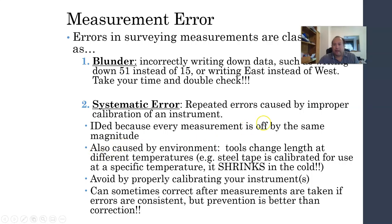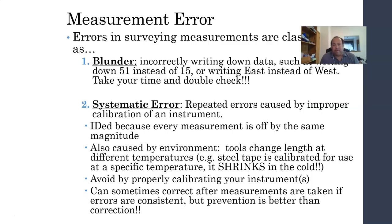Let's talk about some errors that can be made. The first type of measurement error is a blunder — that's just where we make a mistake. The example here is writing down 51 instead of 15, or meaning to say West but writing East. We want to avoid blunders by taking our time and double-checking what we wrote down.